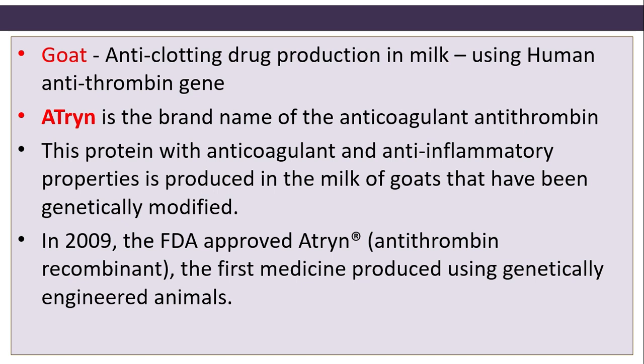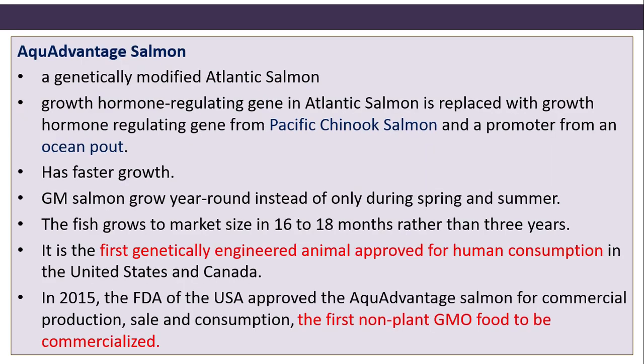ATryn is the brand name of the anticoagulant antithrombin. This protein with anticoagulant and anti-inflammatory properties is produced in the milk of goats that have been genetically modified. In 2009, the FDA approved ATryn (antithrombin recombinant), the first medicine produced using genetically engineered animals.